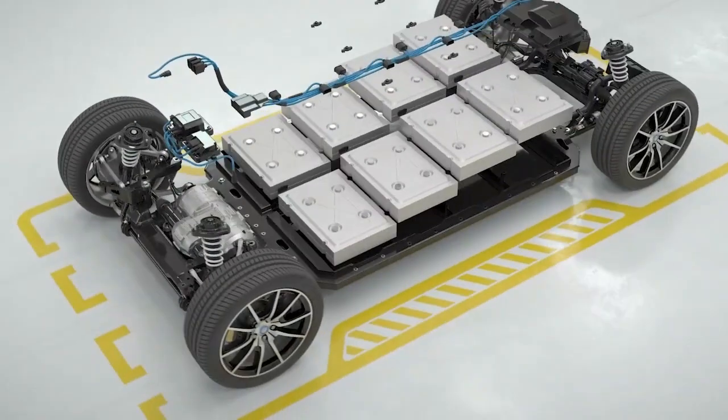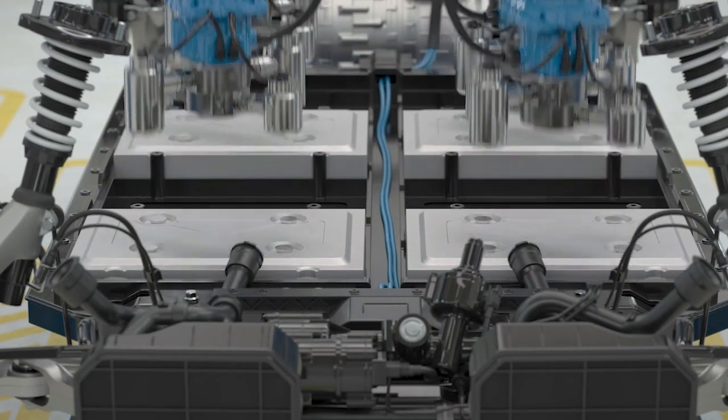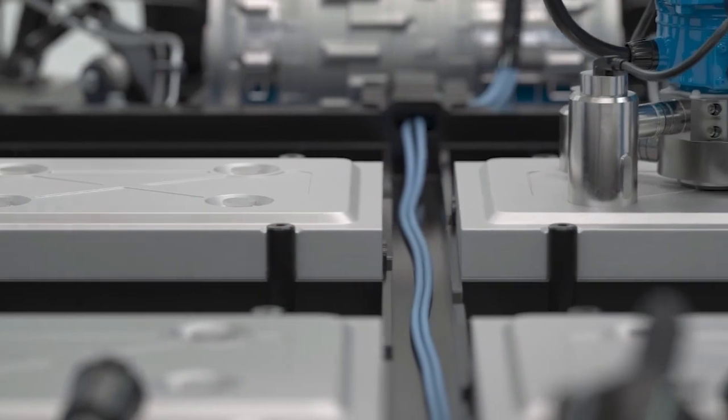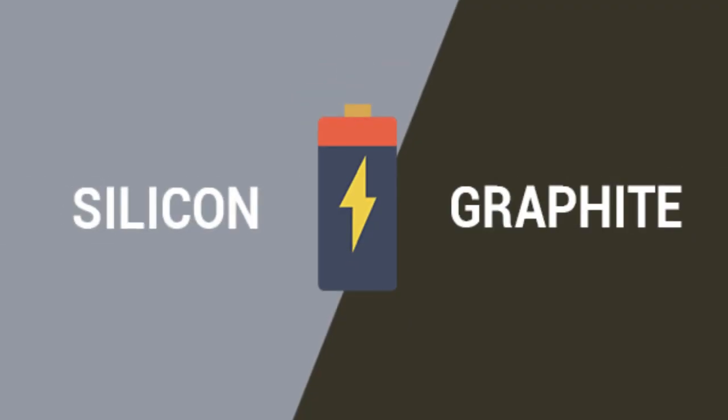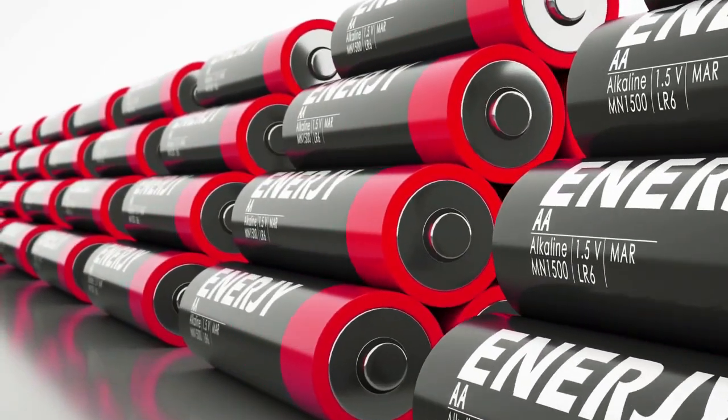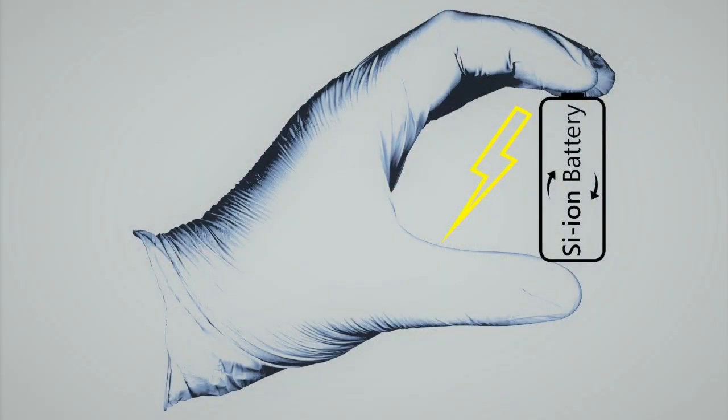But what about the energy density of these remarkable silicon-anode batteries? Prepare to be astounded by their outstanding features that push the boundaries of battery technology to new heights. In the quest for energy density, researchers have made groundbreaking breakthroughs that could revolutionize the industry. By harnessing the power of silicon instead of graphite, batteries can achieve a staggering 20 to 40% higher energy density.